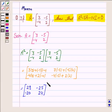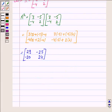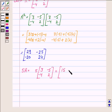So this is A squared. Now we find 5A. To obtain 5A, we need to multiply A with 5. So we multiply each term of matrix A with 5. We get 15, minus 25, minus 20, and 10.